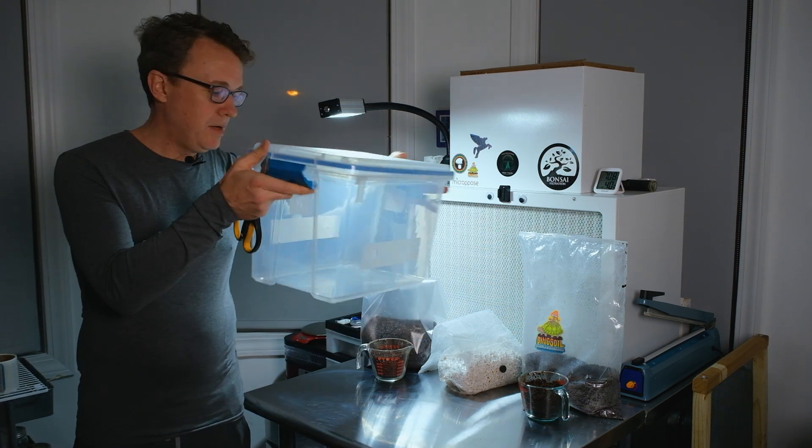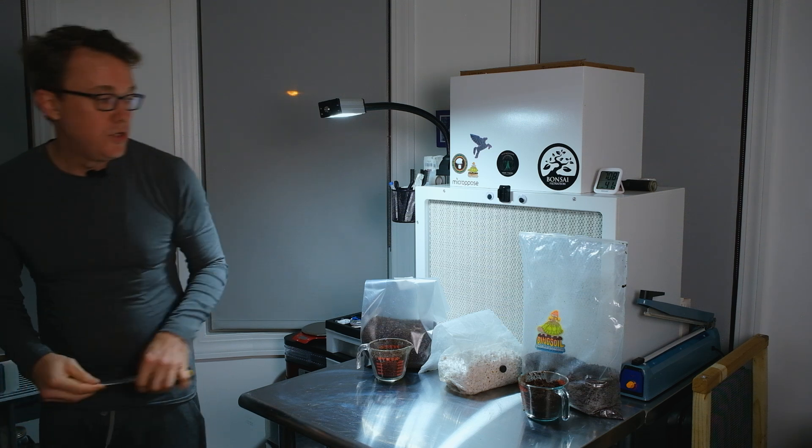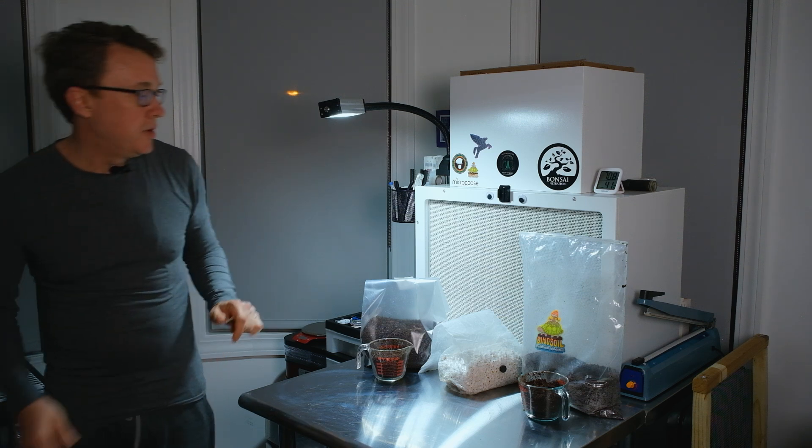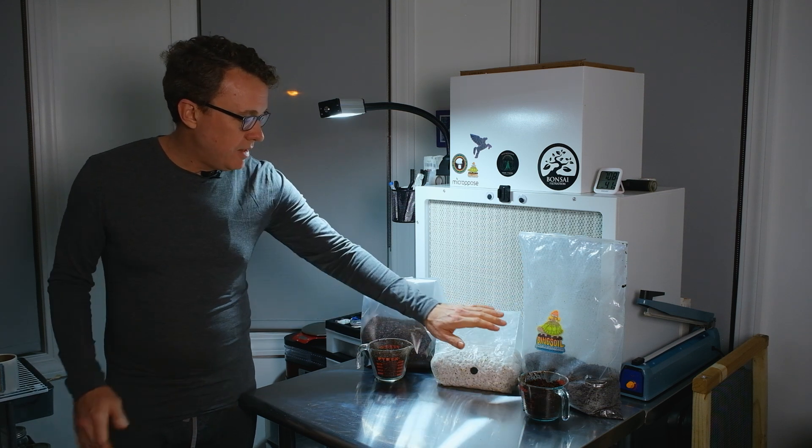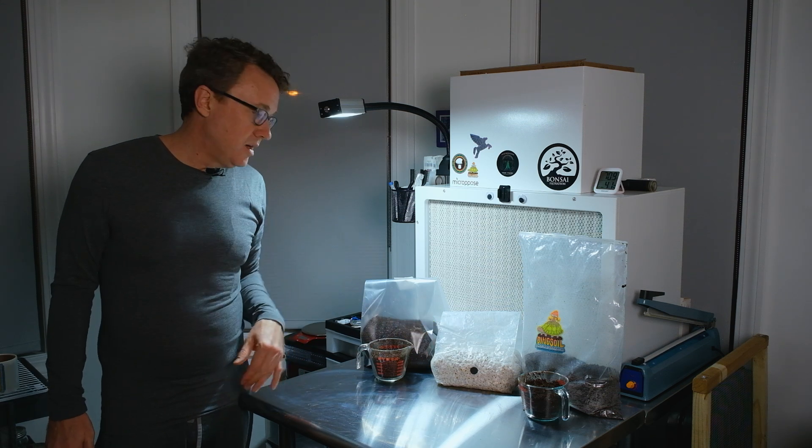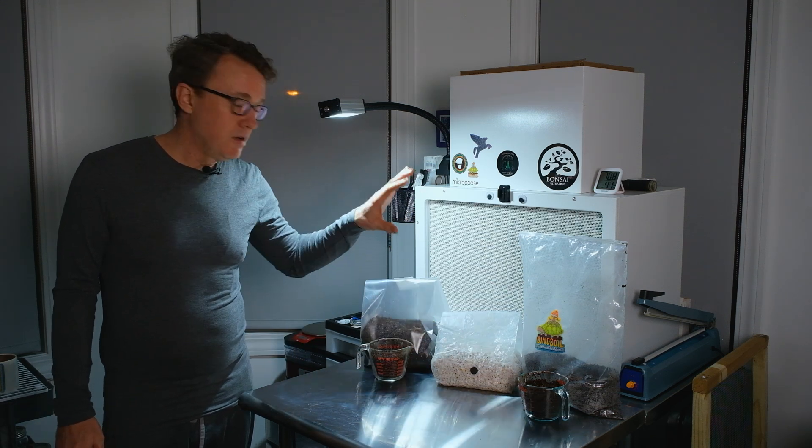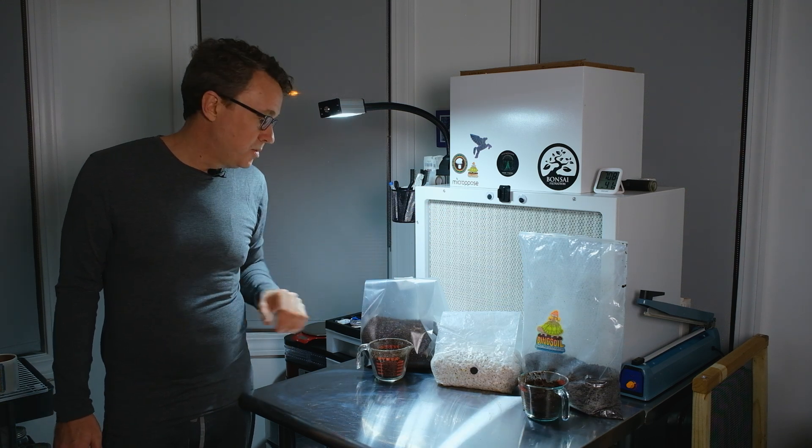We're going to be doing a 2 to 1 substrate to spawn ratio. I've already weighed everything out here. I've got 1400 grams of spawn, so we're going to split that 700-700, which means there's going to be 1400 grams of substrate in each tub to 700 grams of spawn.